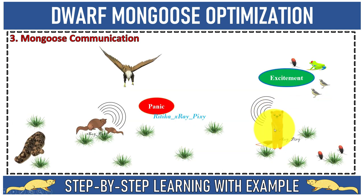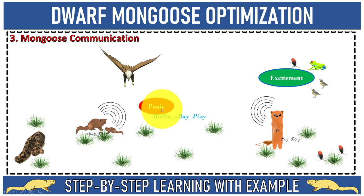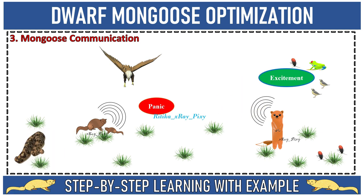Mongoose can walk, run, and climb. They have loud voices and communicate continuously using a variety of tweets and whistles. In a mongoose group, vocal communication is very important to coordinate group members during foraging or when moving from one sleeping mound to another. There are two main sounds: panic sound, which indicates danger nearby, and excitement call, which signals when a new food source is discovered.